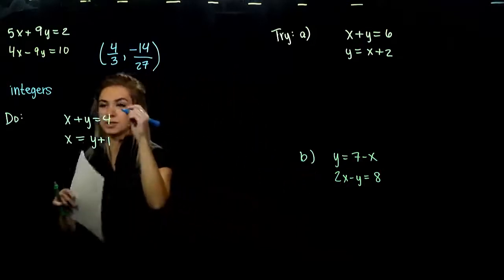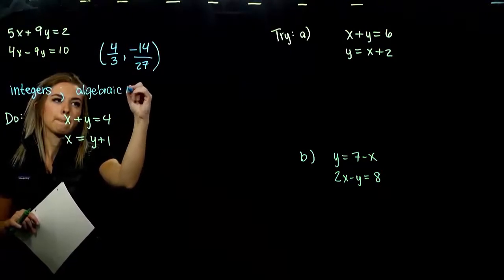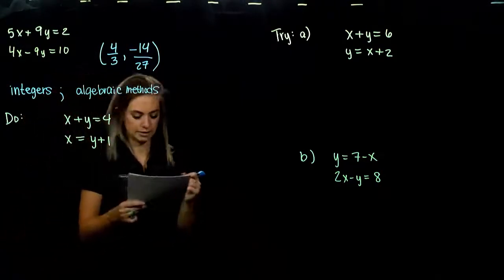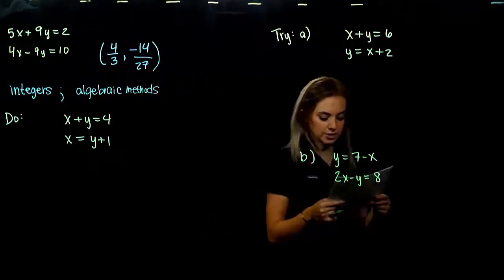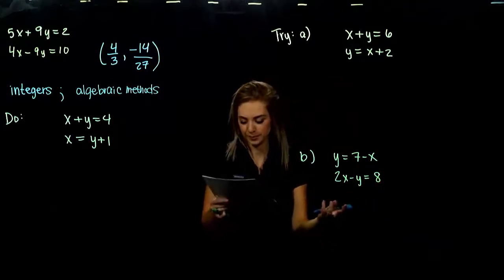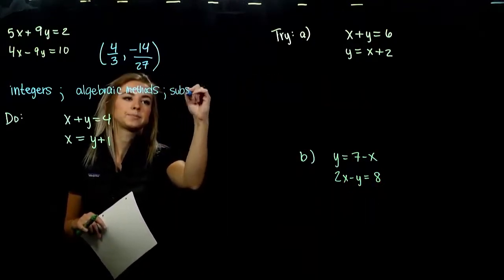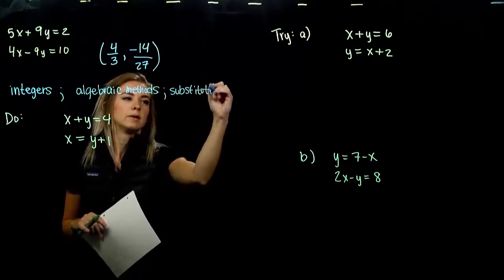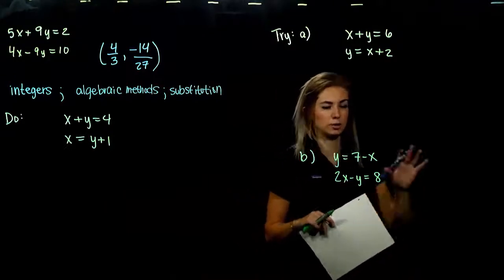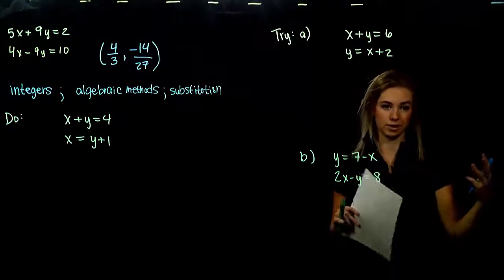So we will develop some algebraic methods — algebra is always more accurate. The first method we're going to learn is the substitution method, which we actually looked at in 090, so it's a little bit of a repeat. Then we'll talk about elimination, and eventually we'll move to larger systems of three equations in three variables.